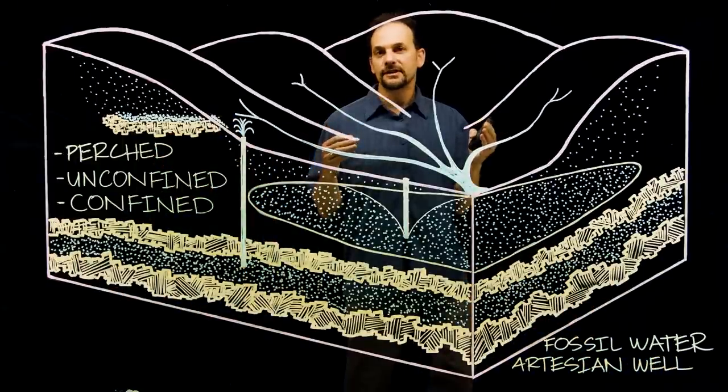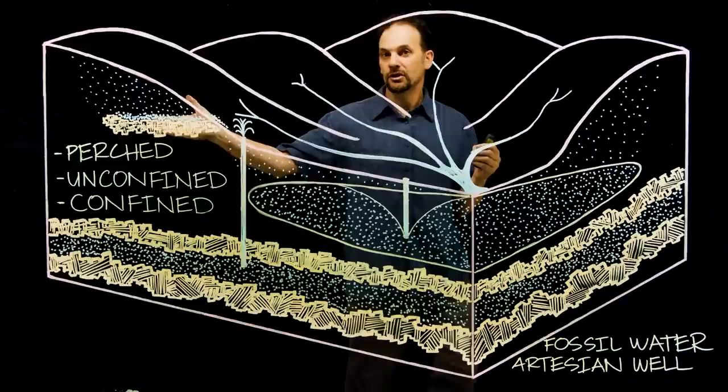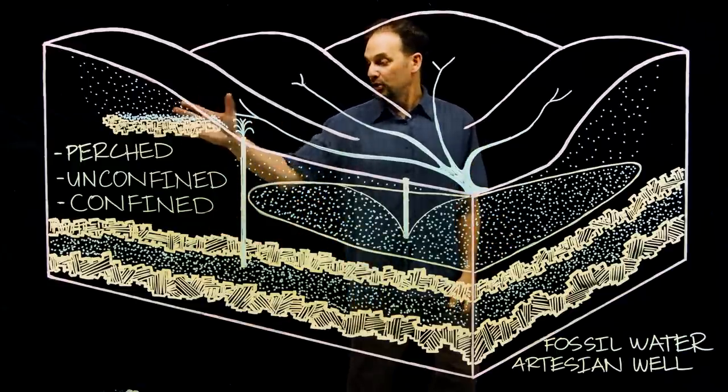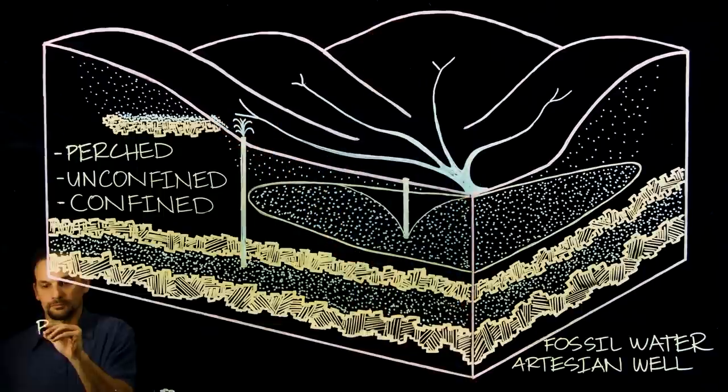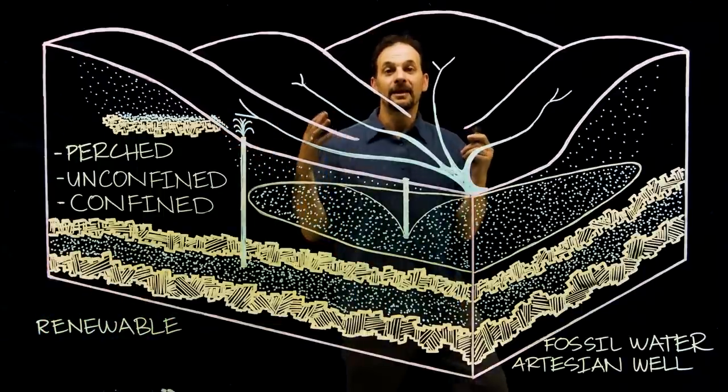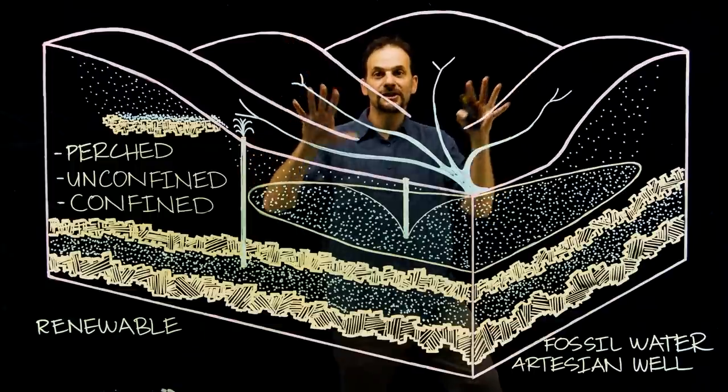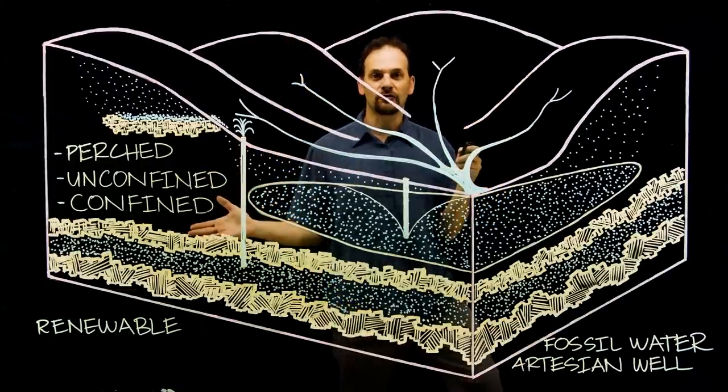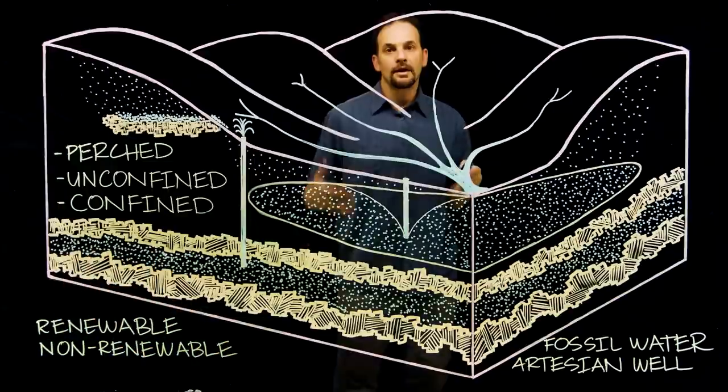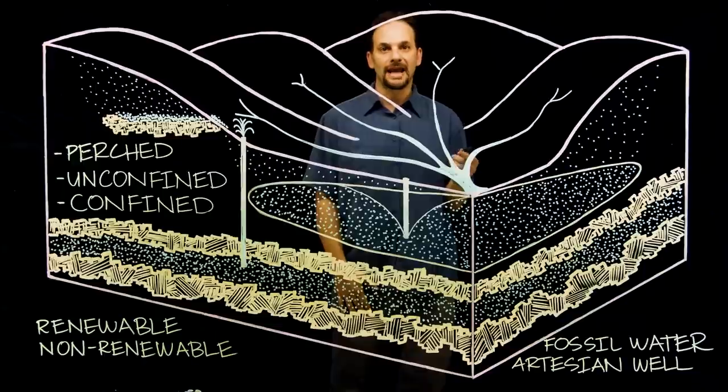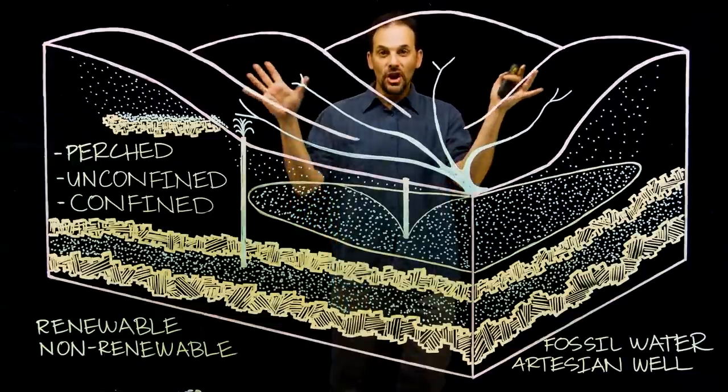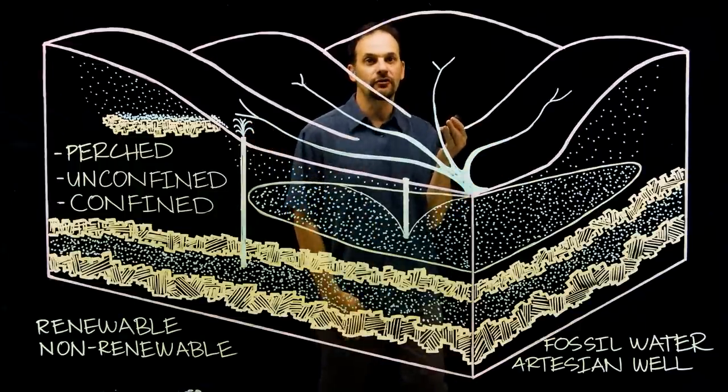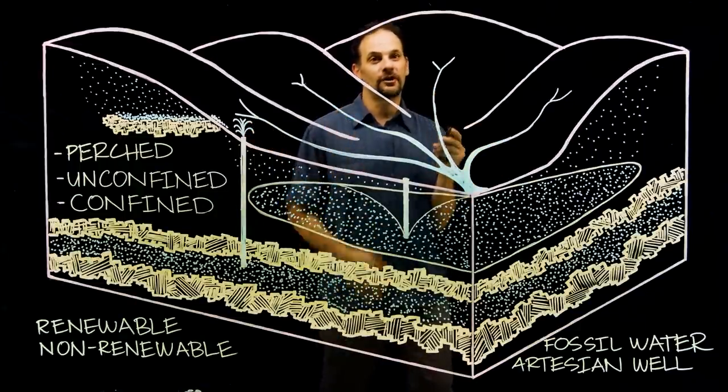One of the main differences between the perched and unconfined aquifers with the confined aquifer is that the perch and the unconfined aquifers are renewable, meaning that the water from the watershed soaks in and recharges that aquifer, but a confined aquifer is non-renewable. Now, it may possibly be recharged by an area far away, but it's not recharged by the land above it. So if you're pulling your water from a confined aquifer, this video is not going to help you very much.